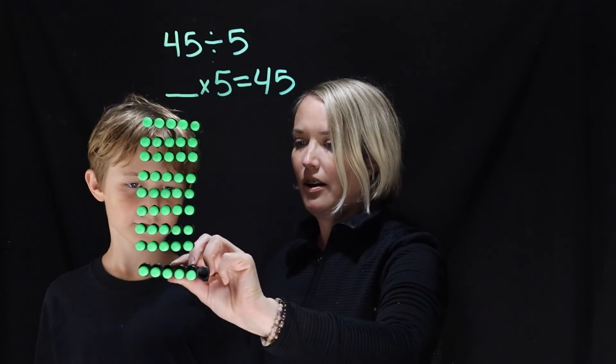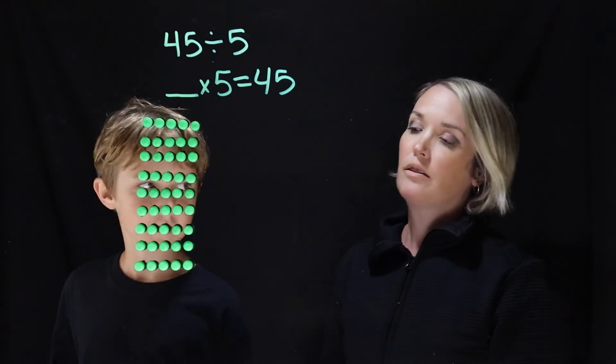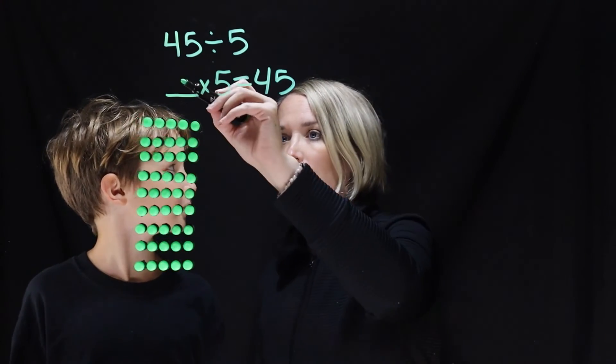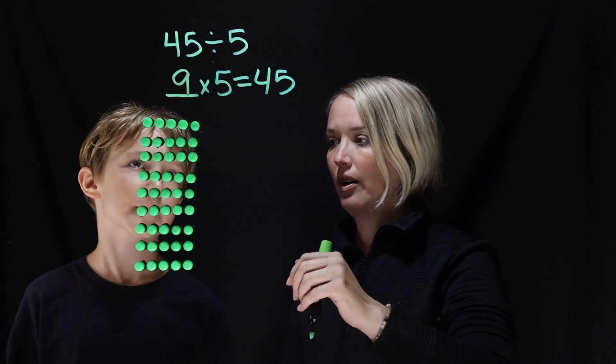And 9 times 5. 9 times 5. 9 groups of 5? Yeah. And that is 45. 45. Okay. So you know that 9 groups of 5 equals 45.